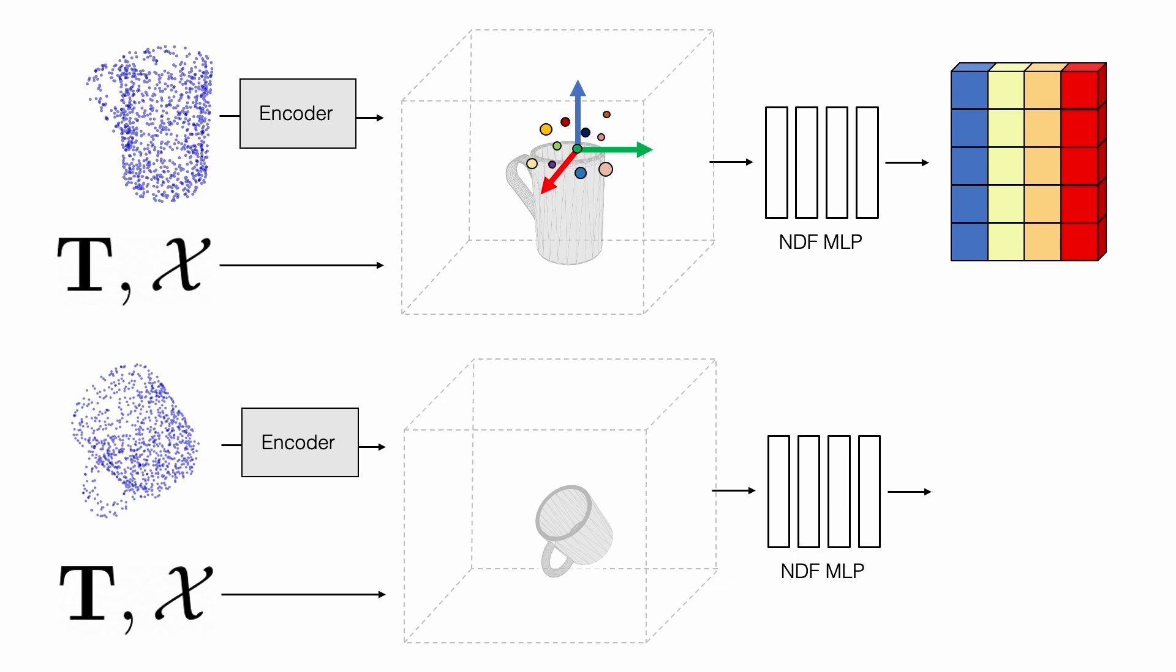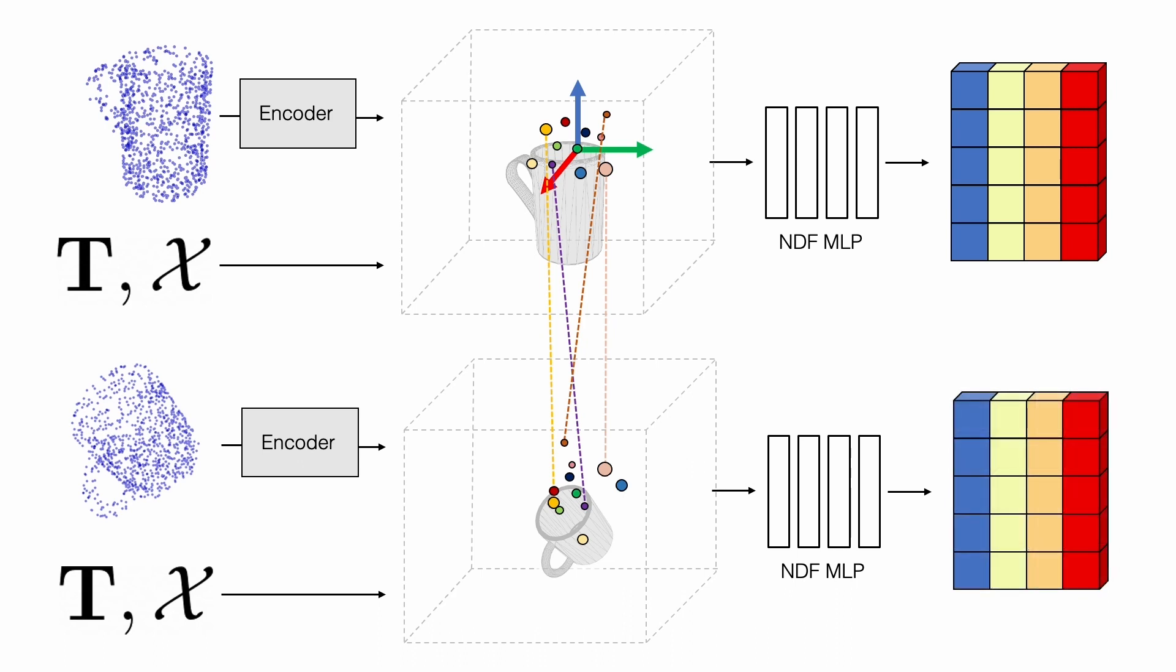This is illustrated in the visualization. Given a new object with a different shape and orientation, a query point set placed in a similar configuration relative to the mug has a similar pose descriptor, as shown by the matching colors. This configuration of the query points subsequently provides a local frame near the new shape, such that the two local frames are positioned and oriented similarly relative to the respective mugs.